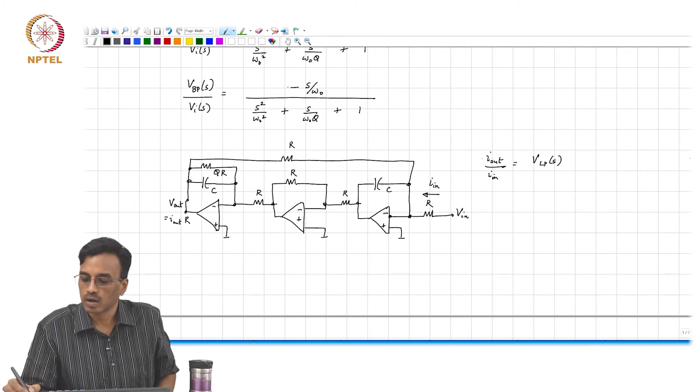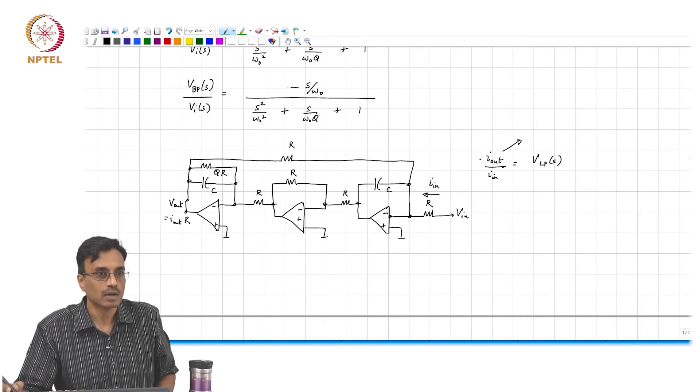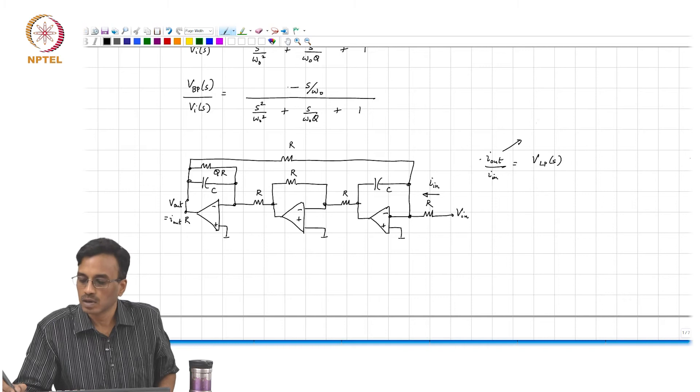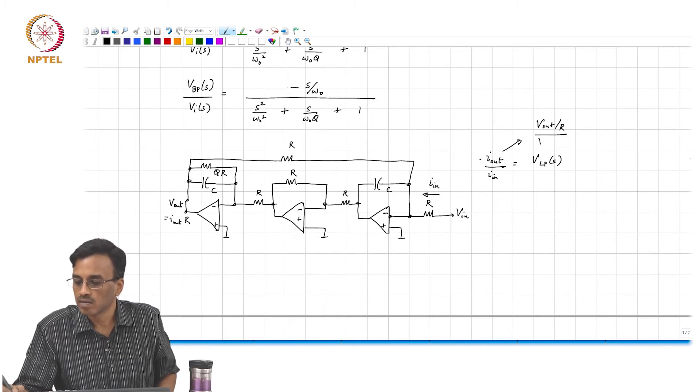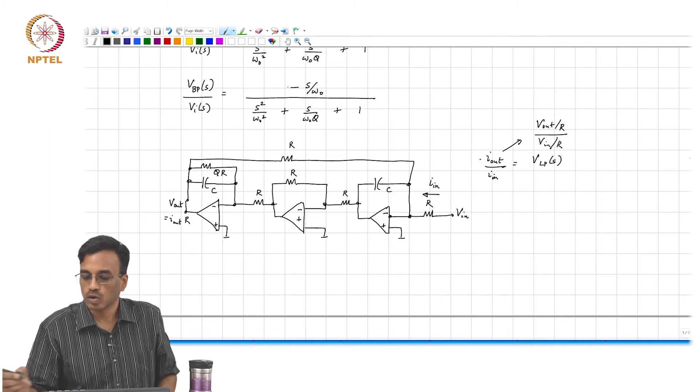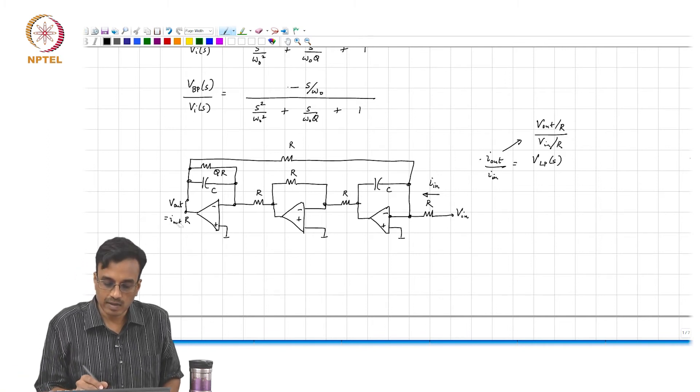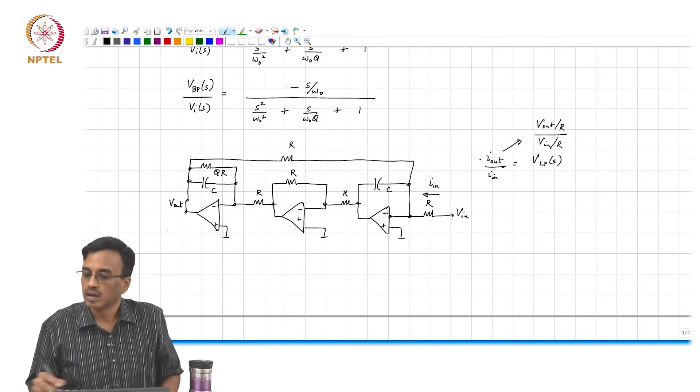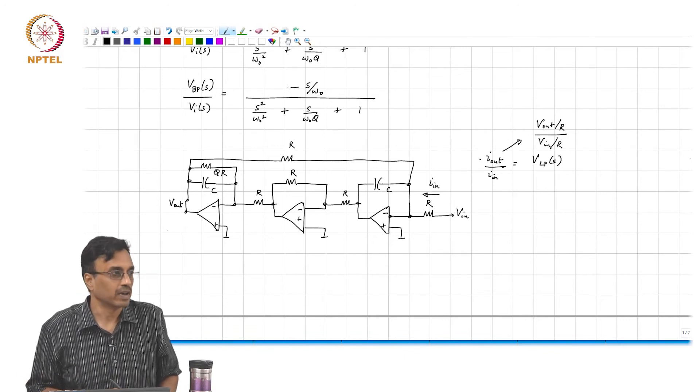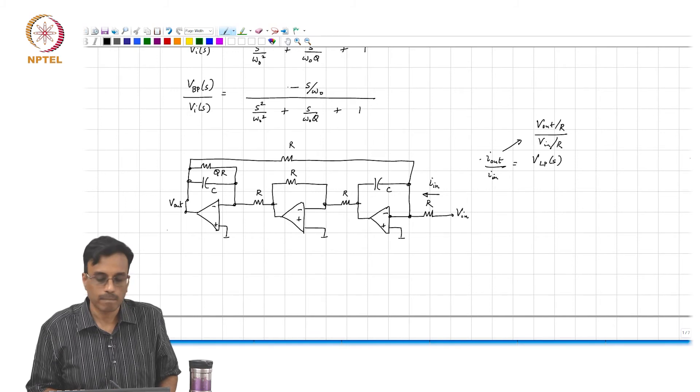What is I out? I out is V out by R, and what is I in? V in by R. So equivalently, this is like saying V out by V in is nothing but V L P of S.